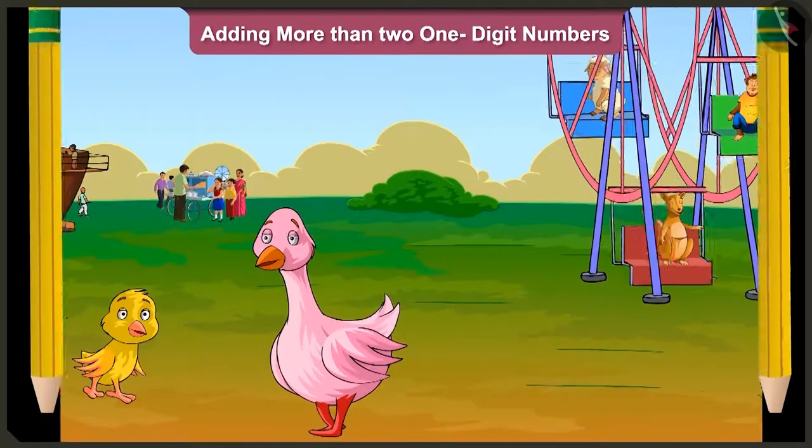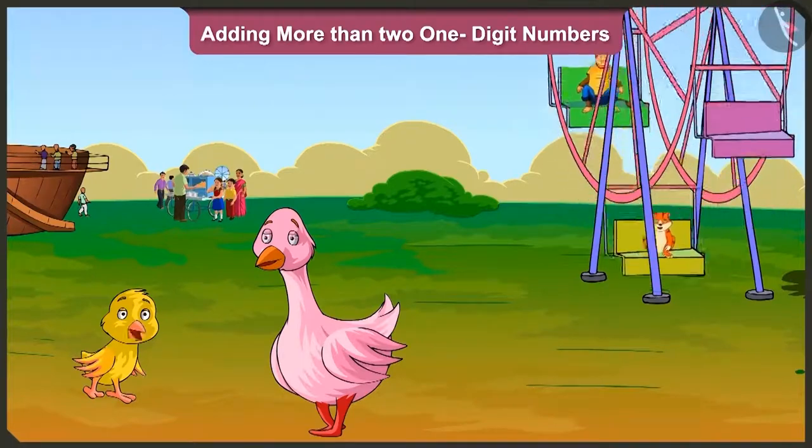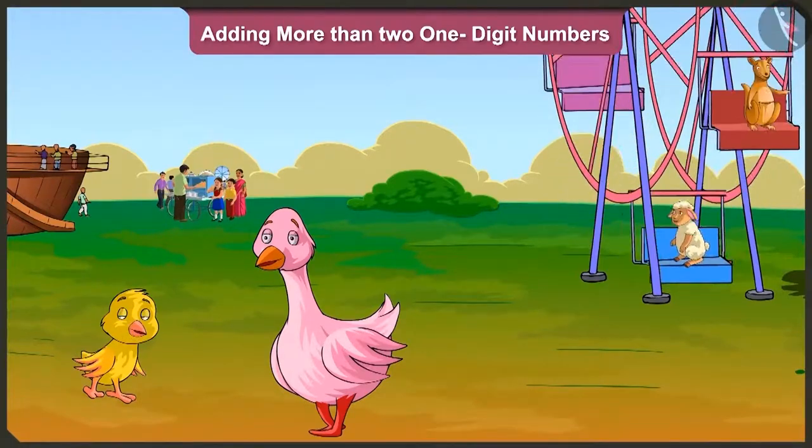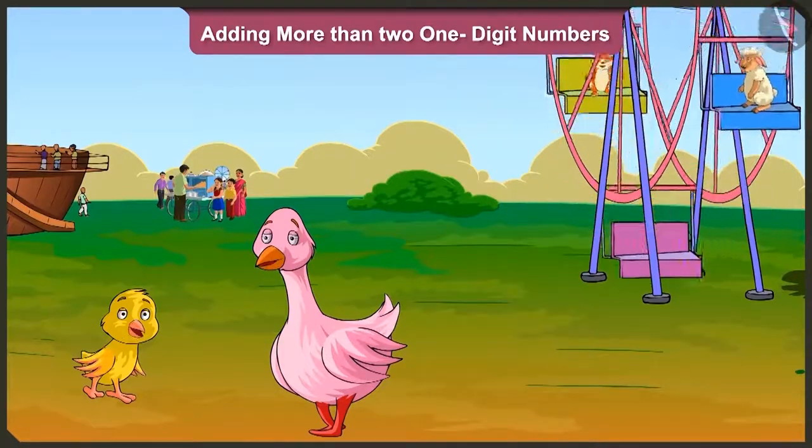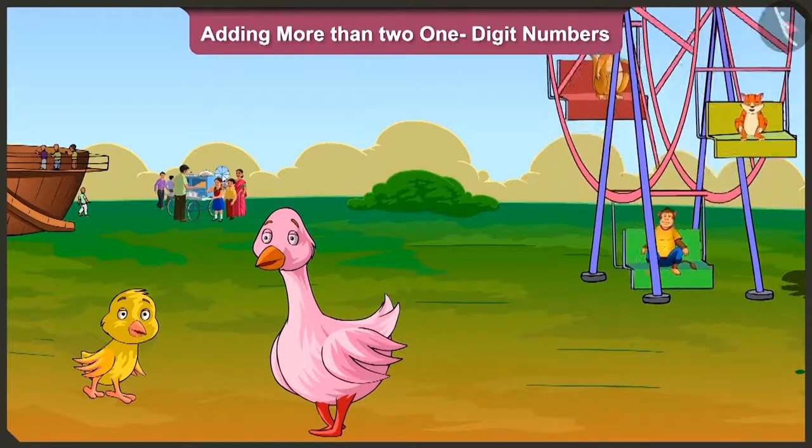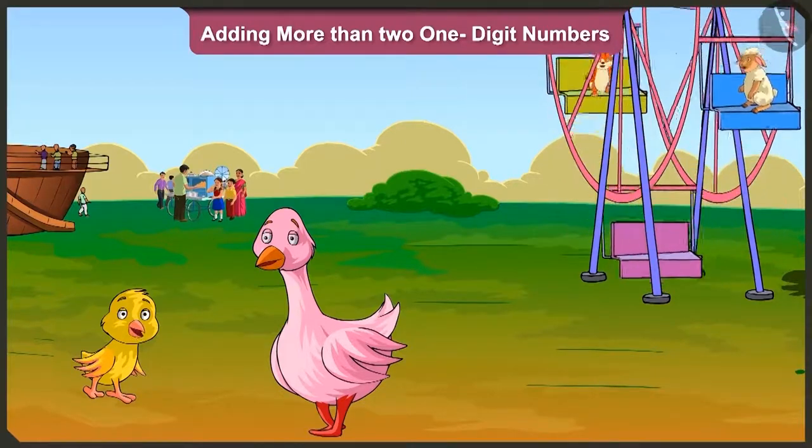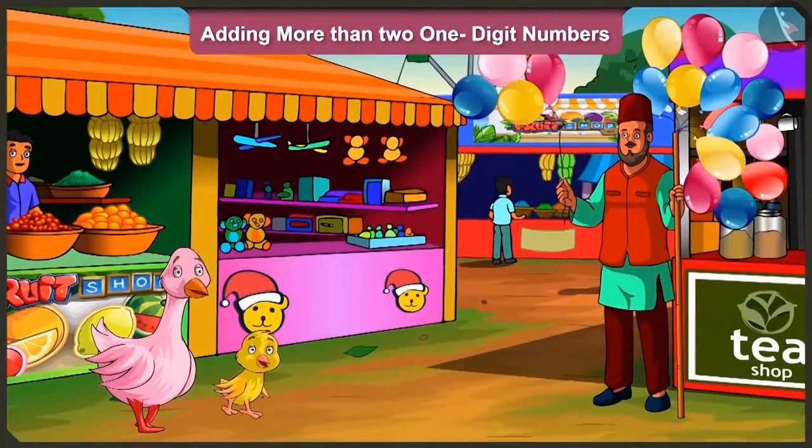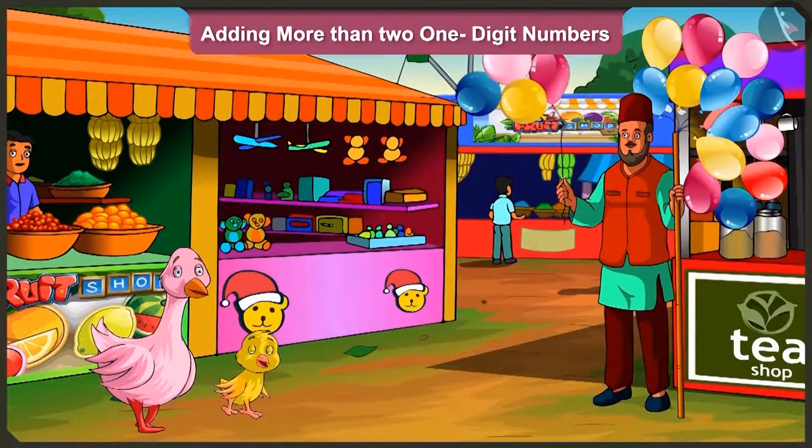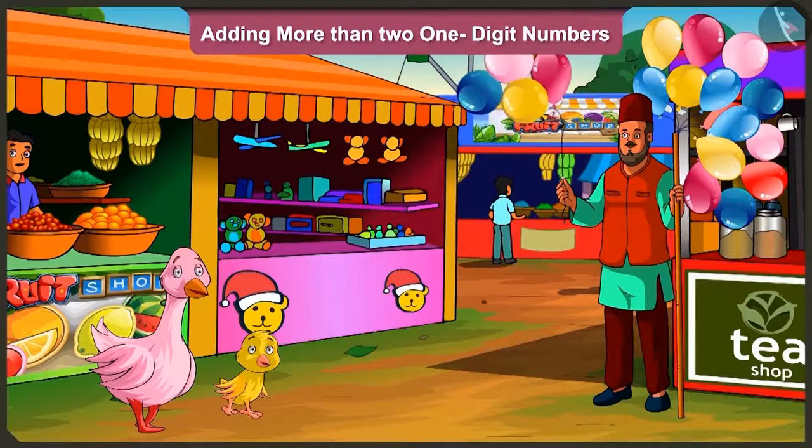Oh wow, this is going to be fun. Hey, you are so happy Pilloo. Why won't I be happy auntie? You brought me to my favourite place. Hey, look auntie, a balloon seller. Come on, let us go there. Yes, let's go.